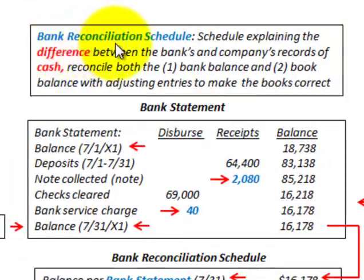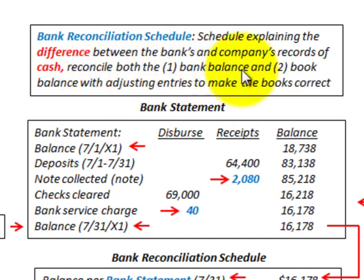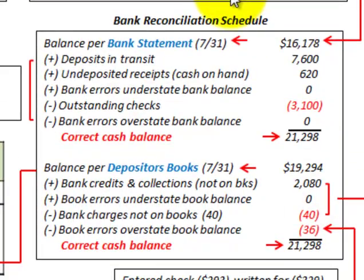What we're going to be going through here is an example of a bank reconciliation schedule. This is a schedule that explains the difference between the bank's and the company's records of cash. We're going to be looking at reconciling both the bank balance and the book balance, and we'll also look at the adjusting entries to make the books correct.